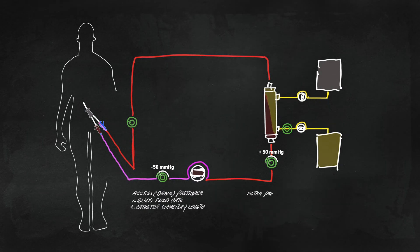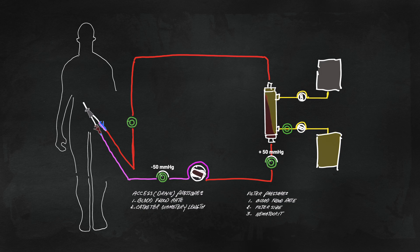Next is the filter pressure sensor between the blood pump and the filter. Its baseline pressure is dictated by the blood flow rate, the filter size, and blood viscosity, and if anything is obstructed downstream.